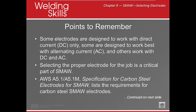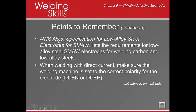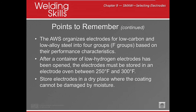AWS A5.1 is the specification covering all carbon steel electrode classifications for stick welding. A5.5 covers all low-alloy stick electrodes. When welding with direct current, set the machine to the correct polarity — electrode negative or positive. AWS organizes electrodes into F groups by characteristics. Low hydrogen electrodes like 7018, once opened, must be stored in an oven at 250–300°F within four hours and must not get wet.